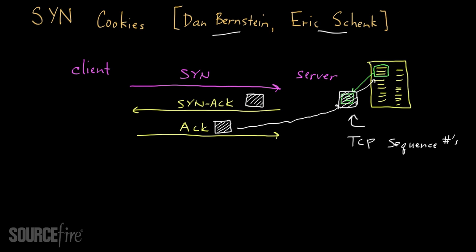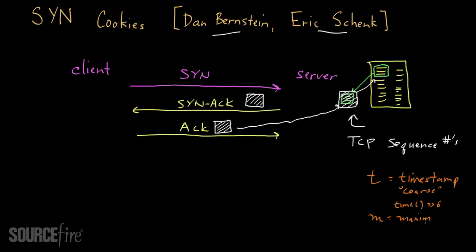There are three elements to the SYN cookie sequence number. First, there's a timestamp T — not a regular timestamp but a coarse timestamp, meaning it increments slowly. One way to do this is to take the actual time in seconds and shift it right by six bits, giving you essentially a 64-second resolution. The second part is a value M, which is the maximum segment size. I won't go into the full details of what that means, as it's not necessary for understanding the scheme conceptually.